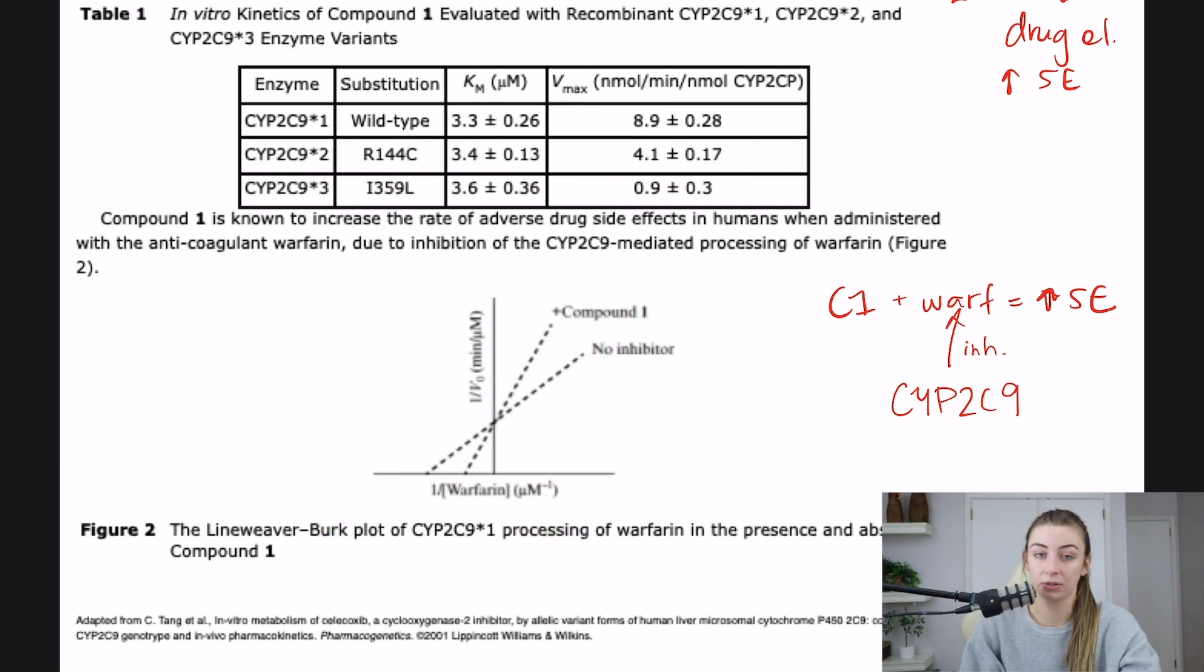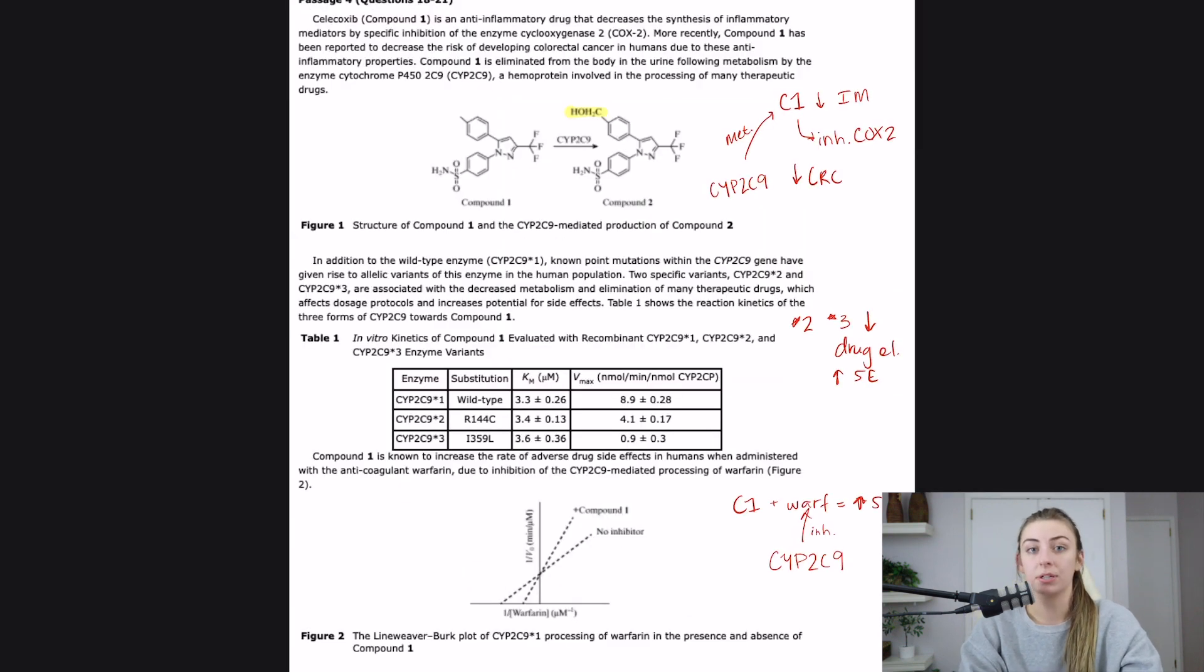It's kind of out of nowhere, I mean the whole passage was talking about inhibition and compound one versus the CYP2C9. But this whole thing about warfarin and definitely this chart is foreshadowing. So this passage was really good for flow charting because there was a lot of like, as you add this, you increase this or you decrease this, or you inhibit this. That's what I love to flow chart because that's the part that's confusing to me. And it's the part that they can easily ask a question. Like if I increase the concentration of compound one, what's going to happen? And then I can just look back at my flow chart and see kind of what compound one does.